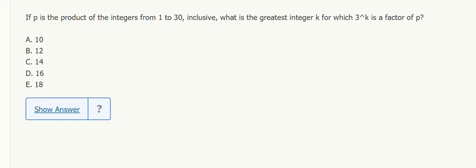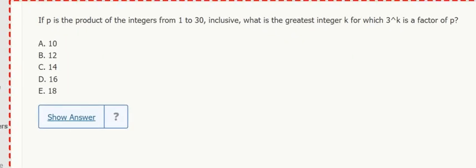P is the product of the integers from 1 to 30, so it's just 30 factorial. Product of all the integers 1 times 2 times 3 times 4 times 5. It's just 30 factorial.